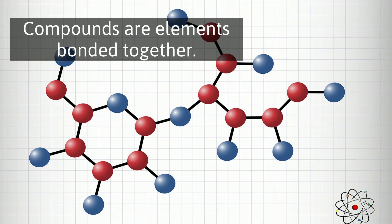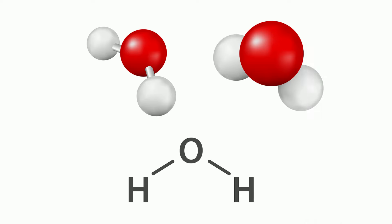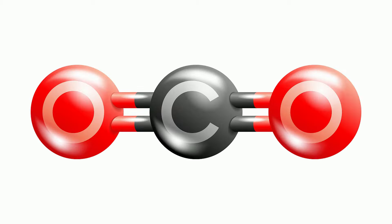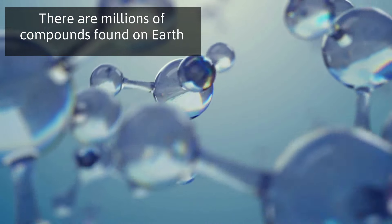Compounds, which are elements bonded together, are also pure substances. For example, take water — it contains two hydrogen elements bonded to one oxygen. Carbon dioxide contains two oxygens bonded to a carbon. They require a chemical process to separate this compound. There are millions of compounds found in the world.